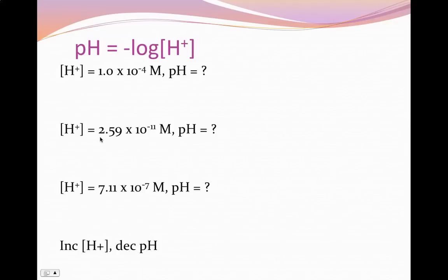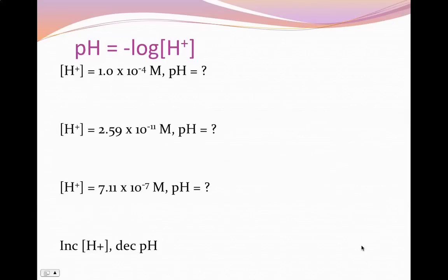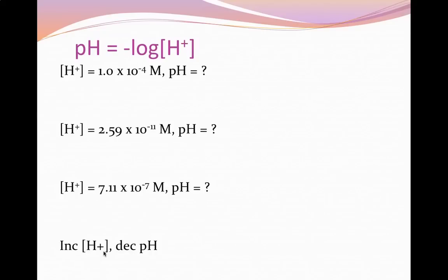For the next example, taking the negative log of 2.59×10⁻¹¹ gives approximately 10.6, with the correct significant figures. And for 7.11×10⁻⁷, the negative log gives 6.15. Notice that an increase in the concentration of the hydronium ion leads to a decrease in pH, which makes sense: the more hydrogen or hydronium ions in solution, the more acidic it is, and the further from 7 toward 0.